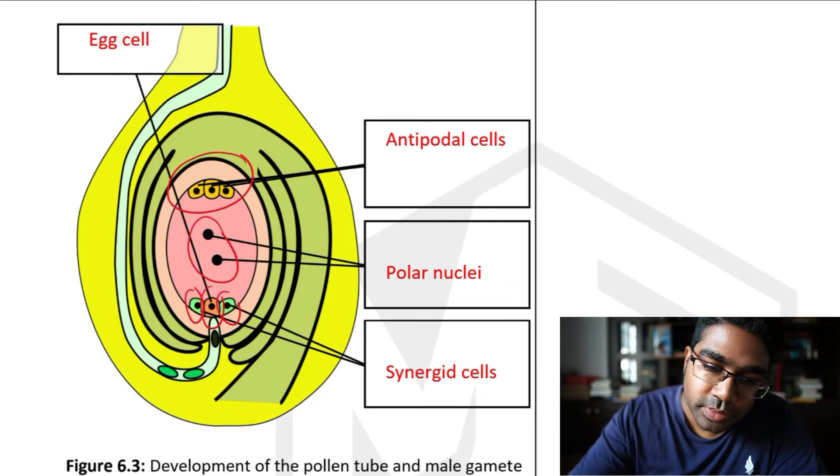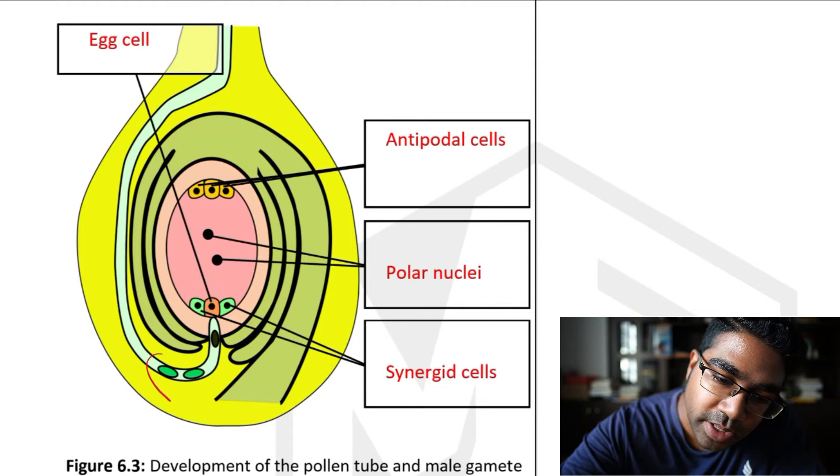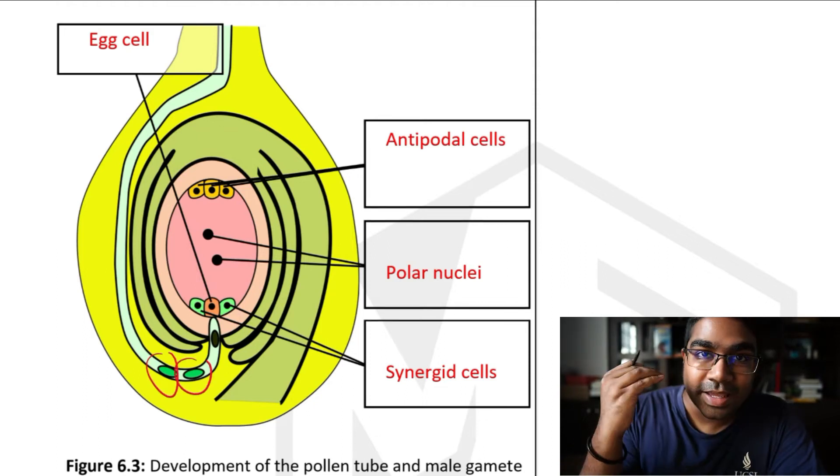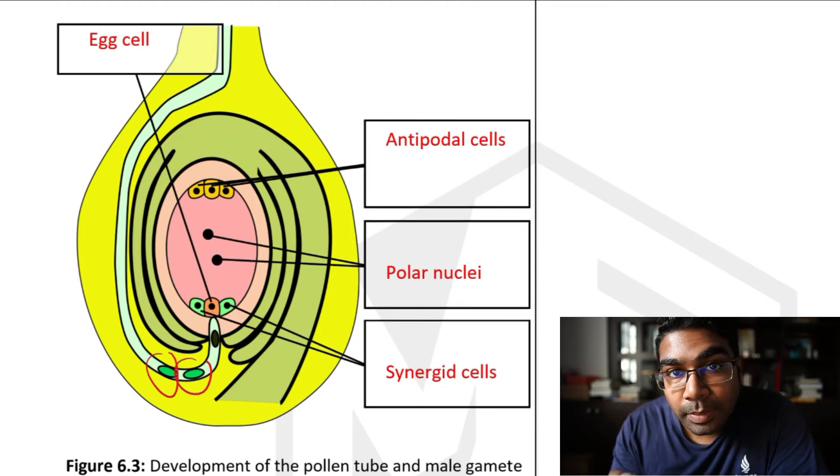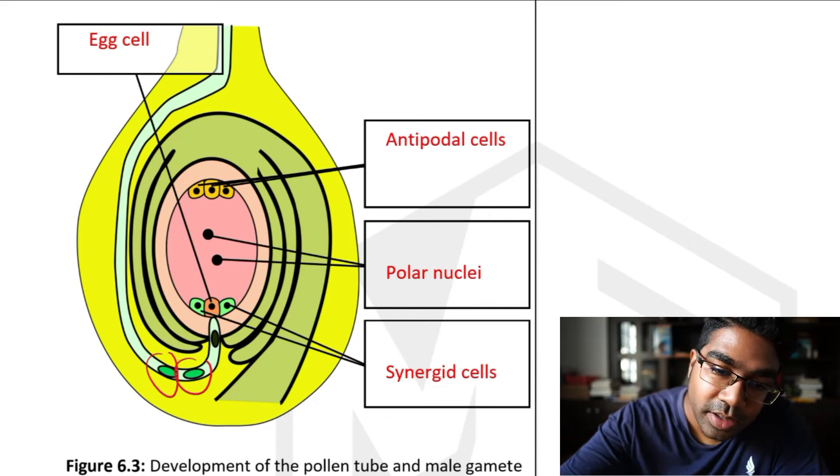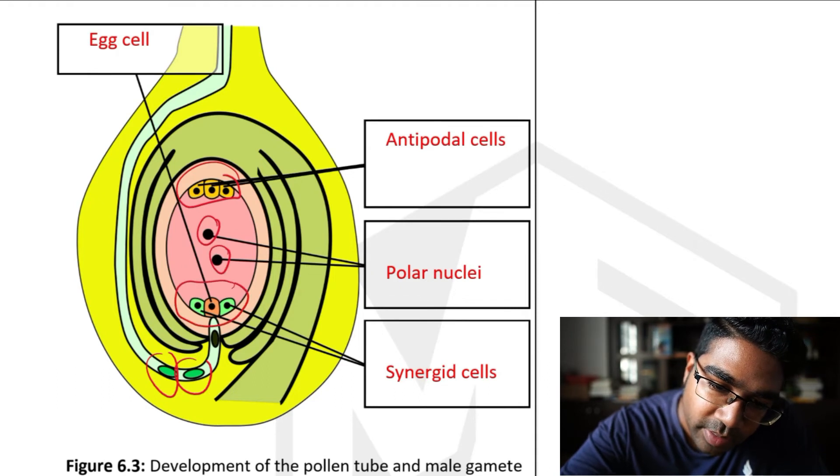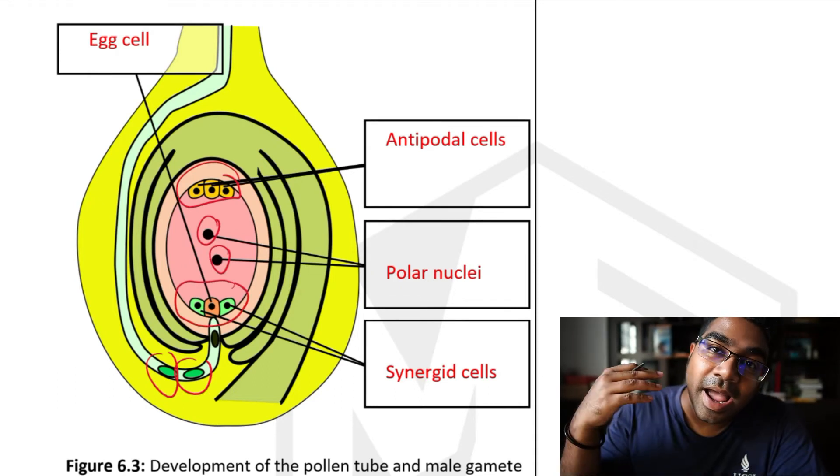And so the two male gametes are going to come in here. We have to remember that the male gametes, since they are gametes, they are haploid, which means they have n number of chromosomes. And all the cells here, all the nuclei that are in the embryo sac, once again, are haploid as well.